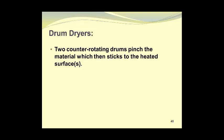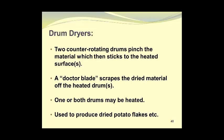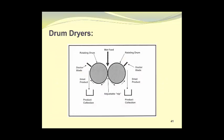Drum dryers have two counter-rotating drums which pinch the material, which then sticks to the heated surface or surfaces if both drums are heated. A doctor blade scrapes the dried material off the heated drum or drums. One or both drums may be heated. They are used to produce dried potato flakes and other similar products. Here we see a diagram of a drum dryer where wet feed is introduced into the nip between two counter-rotating heated drums. The material sticks to the drum surface and moisture is removed. A doctor blade then scrapes the dried material from the drum surface and it falls into a product collection hopper.